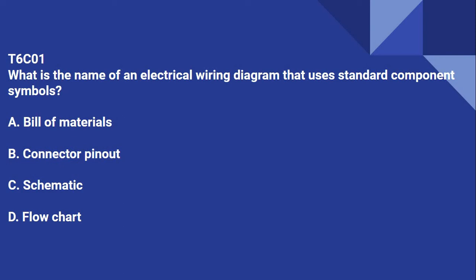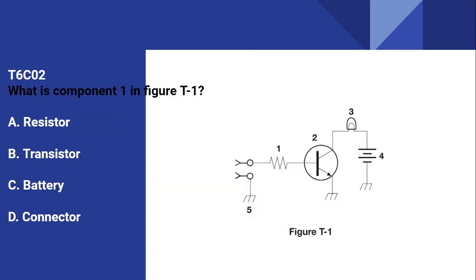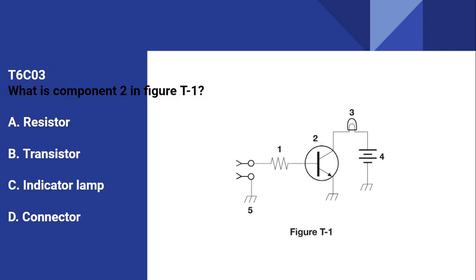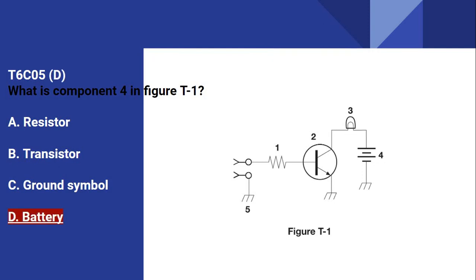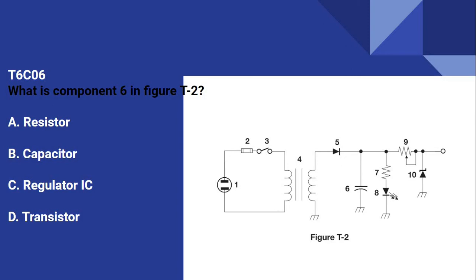T6C01: What is the name of an electrical wiring diagram that uses standard component symbols? That is a schematic. T6C02: What is component 1 in figure T1? T6C03: What is component 2 in figure T1? That would be a transistor. T6C04: What is component 3 in figure T1? That would be a lamp. T6C06: What is component 6 in figure T2? That is a capacitor.